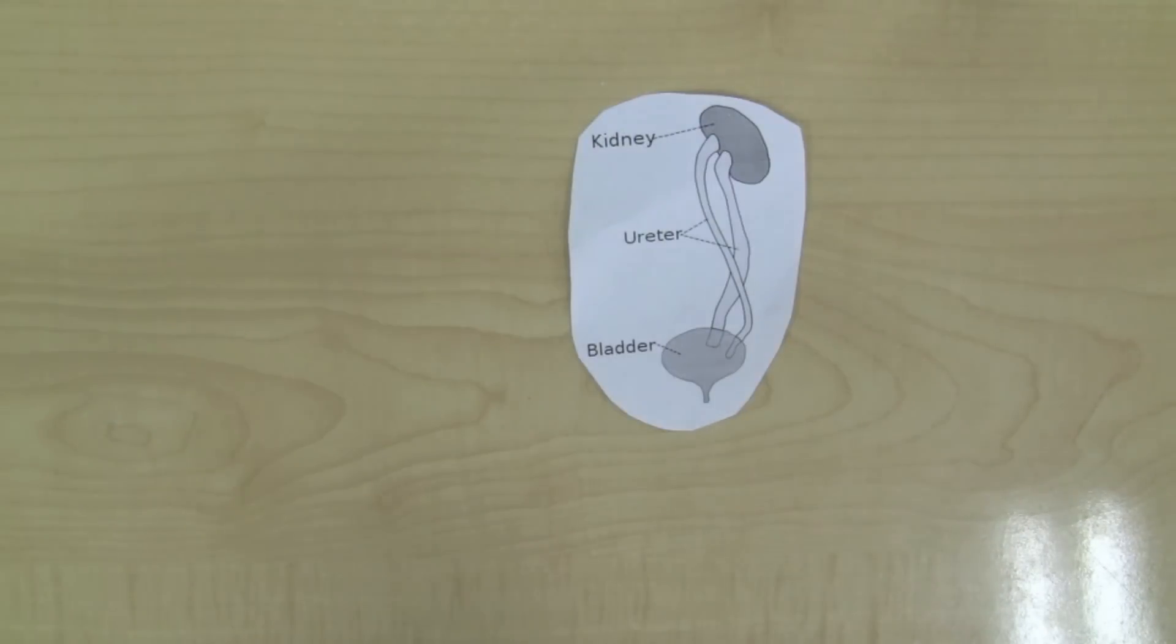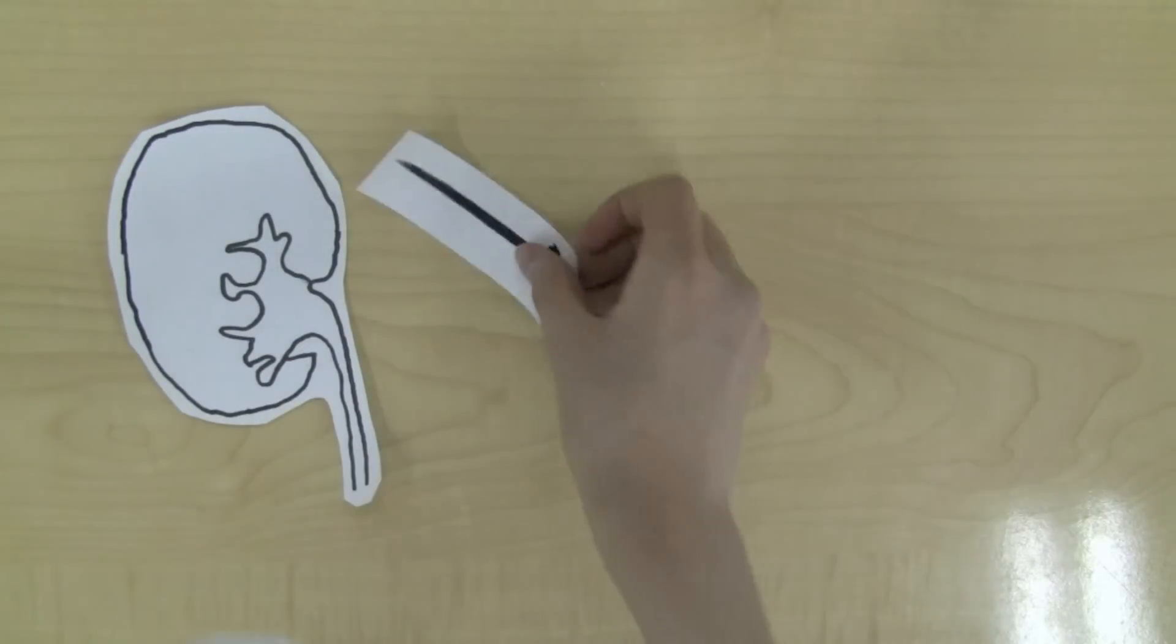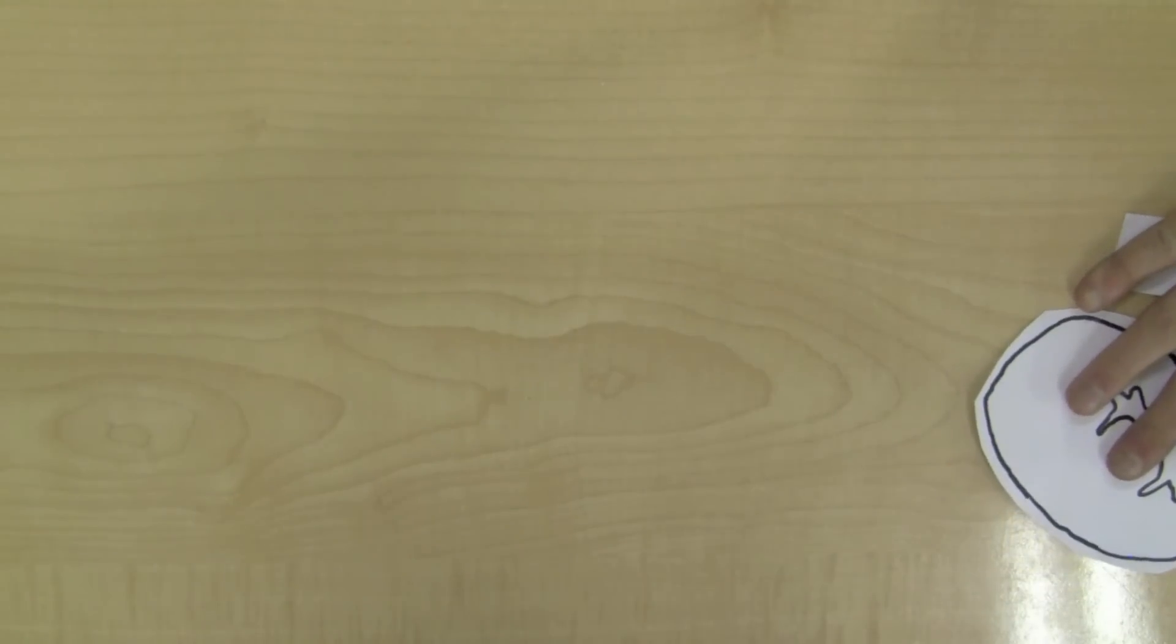The ureter is a muscle tube that acts like a conduit. The ureter helps our urine travel from our kidneys to our bladder. When we are fully grown, our ureter is 25 to 30 centimeters long and 3 to 4 millimeters in diameter.